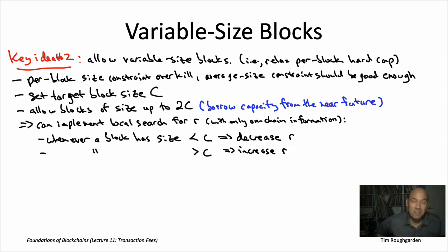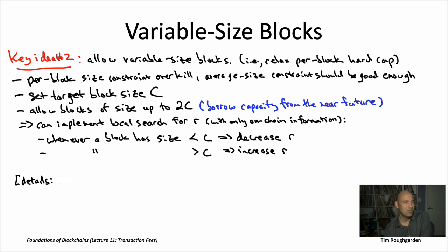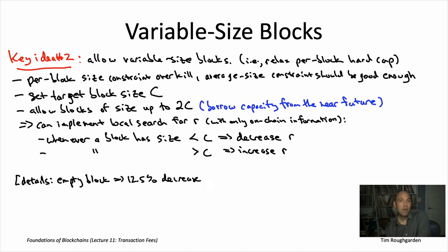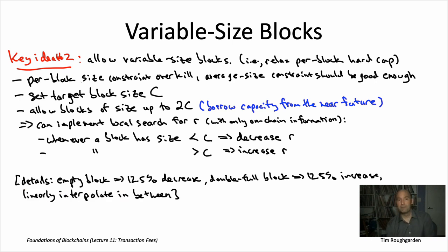The specific adjustment rule in EIP-1559: whenever you see a completely empty block — the most extreme signal that the base fee is too high — the base fee decreases by 12.5% for the next block. Conversely, whenever you see a double-full block at twice the target — the most extreme signal it's too low — the base fee increases by 12.5%. In between, the adjustment interpolates linearly. If a block's size is exactly the target, the base fee remains unchanged.